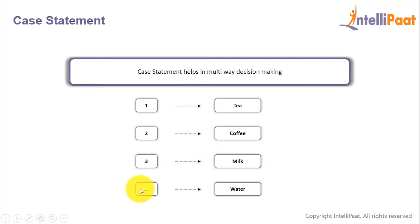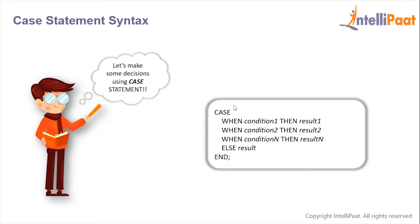And for any other case the person will order water. So this is basically how the case statement works. The case statement goes through conditions and returns a value when the first condition is met. This is the syntax for the case statement.